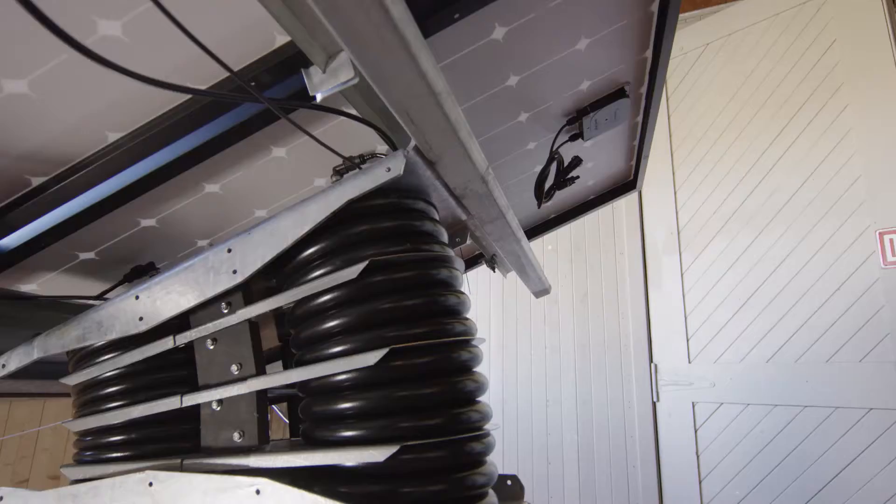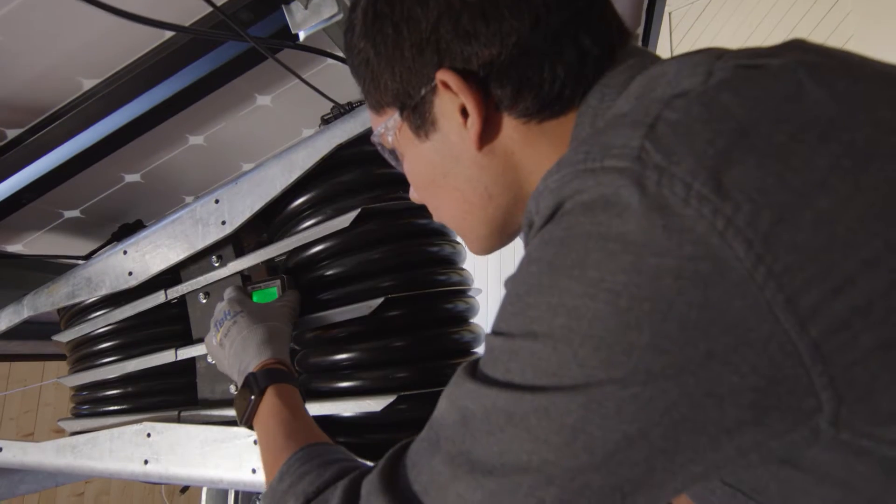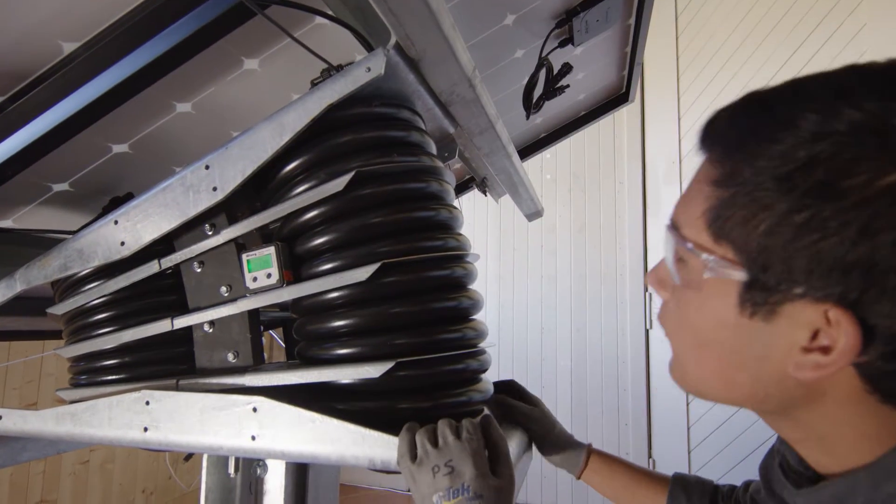At Sunfolding, we're building a new kind of solar tracker. Traditional trackers are built with 100-year-old machinery, so they're built with motors and gearboxes and torque tubes and bearings, lots and lots of moving parts and lots of wear surfaces. We are replacing the traditional machinery of a solar tracker with polymers and air.